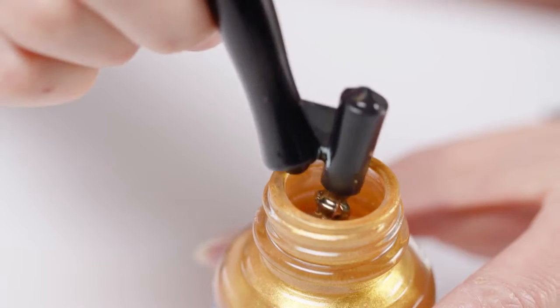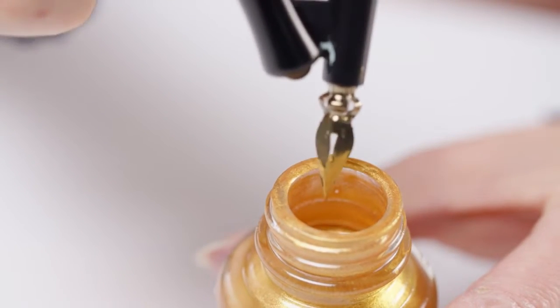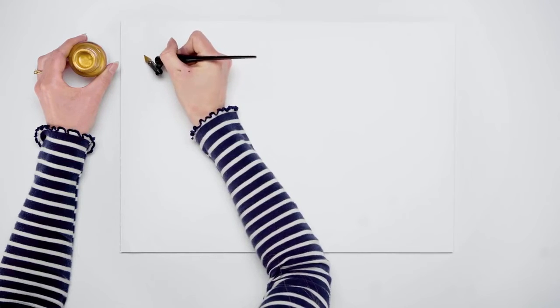I'm using Winsor & Newton gold calligraphy ink with a dip pen and just practicing some flourishes for the letter P.